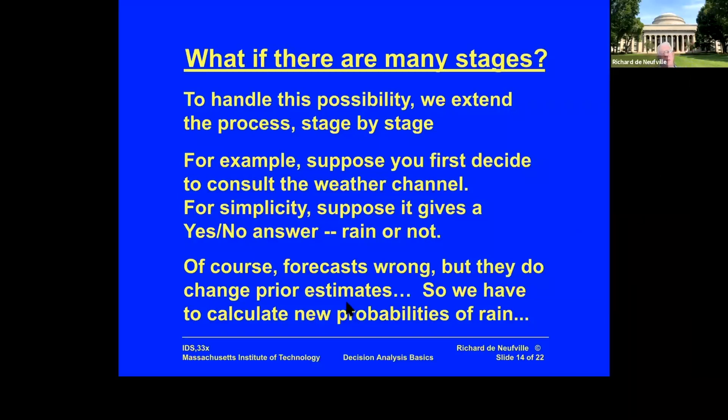These forecasts that say it rains can be wrong. But if they do say rain, you're saying, 'I thought it was a 30% chance of rain, but now they say rain, so I'm gonna bump it up.'